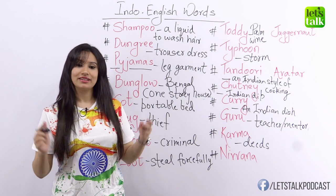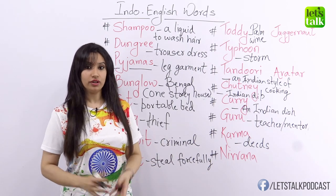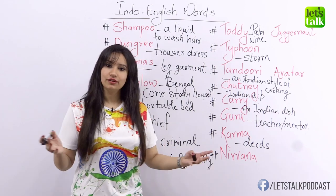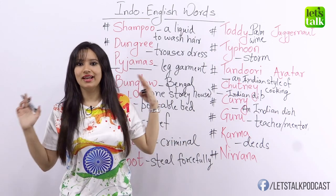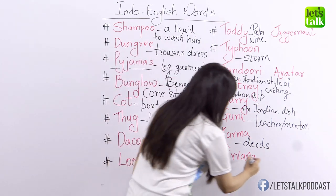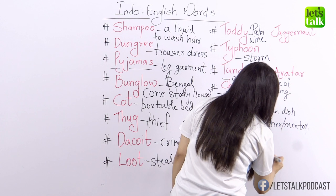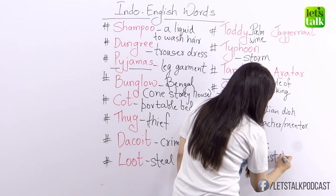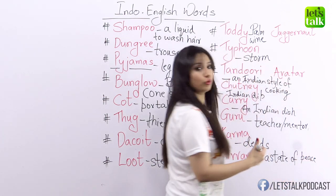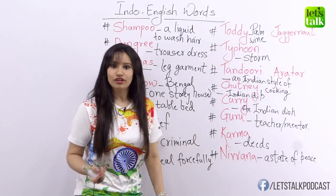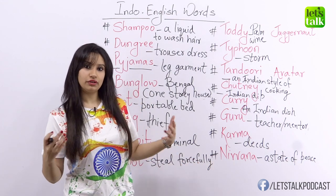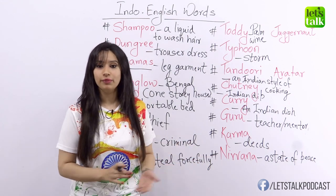The next word is nirvana — a Hindi word that comes from Buddhism. Nirvana is a state of peace and happiness where there is no suffering. We all want to achieve that! You could say, for example, that the painkillers helped John reach a state of nirvana because he couldn't feel the pain anymore.